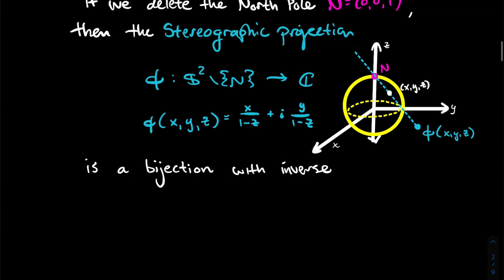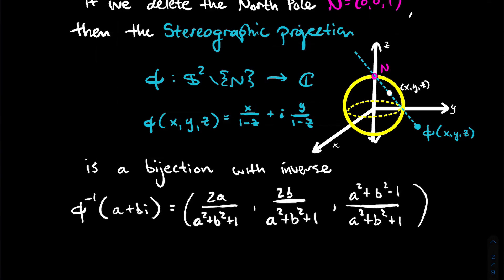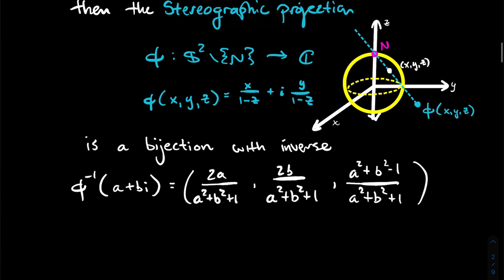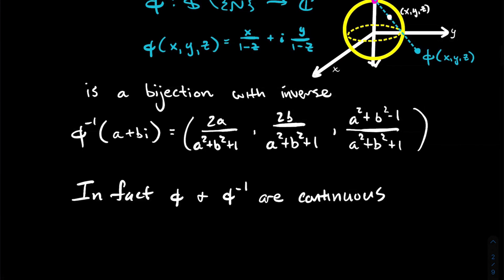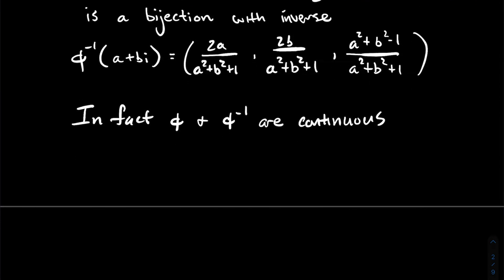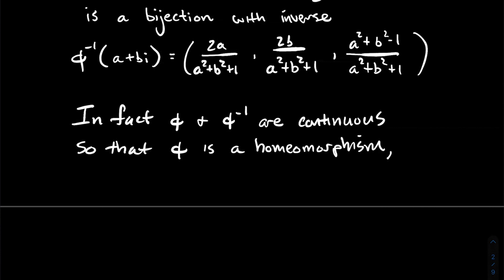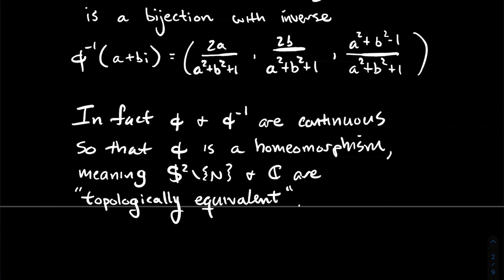This function is a bijection — we covered why in a previous video, along with its inverse. The inverse φ⁻¹ takes a point in the complex plane and gives you the corresponding point on the sphere, with a formula based on the real and imaginary parts of your complex number. We also saw that φ and φ⁻¹ are both continuous functions, making φ a homeomorphism.